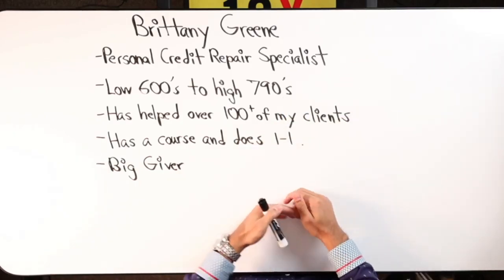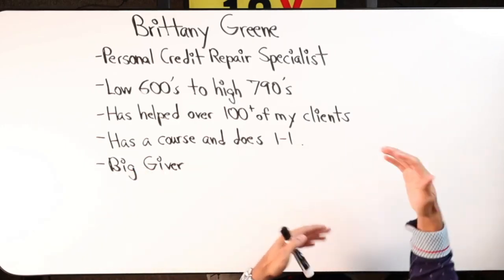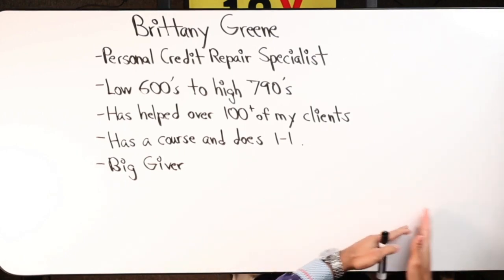So it'll drop as low as 740, 750 and then go back up to 789, 791. It's constantly fluctuating but it goes higher than it goes lower over time.